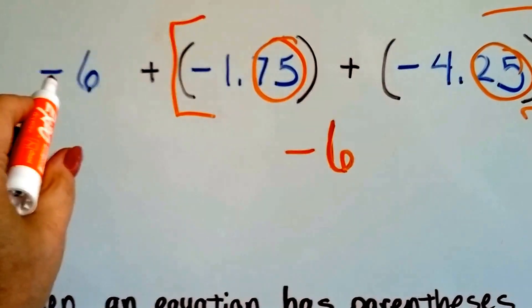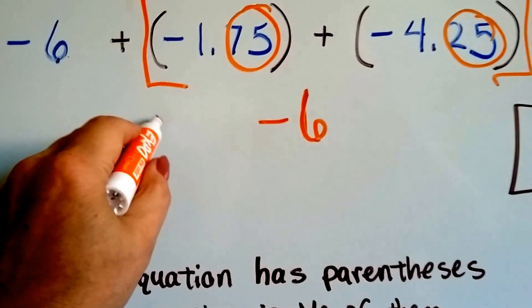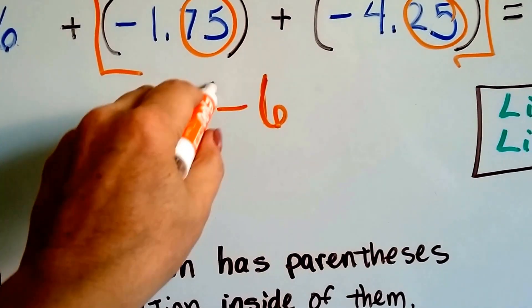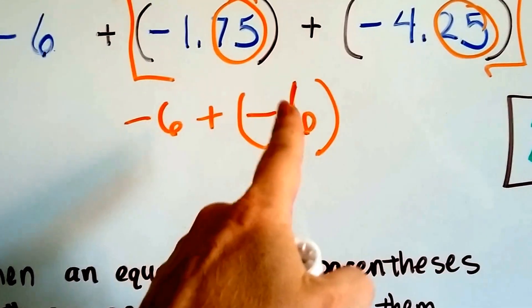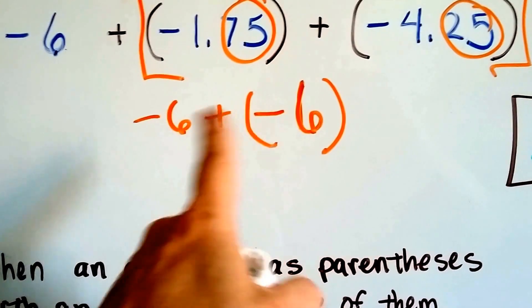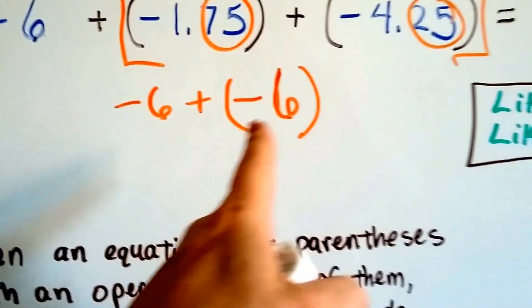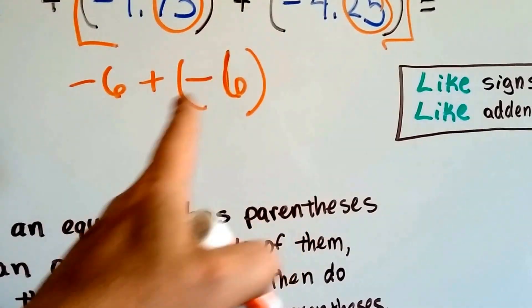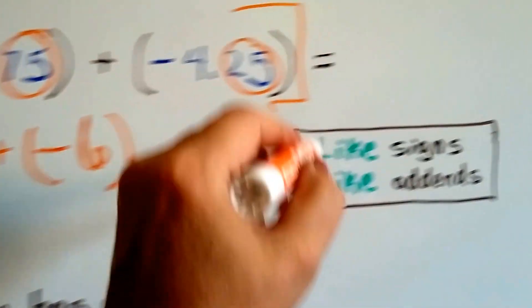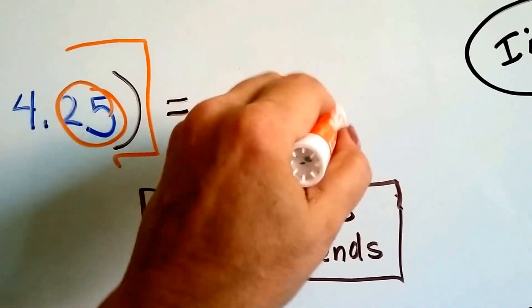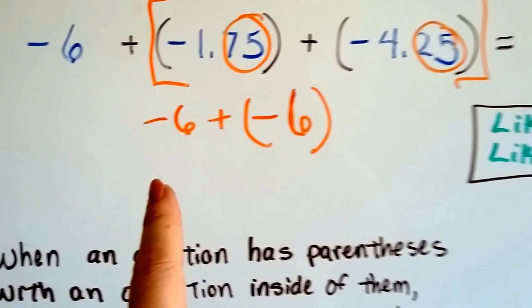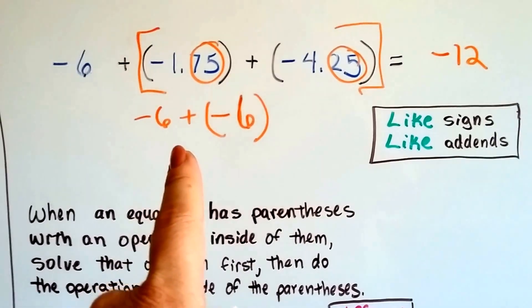So now we're going to add a negative 6 plus a negative 6. They both have the same sign, so we add them together. 6 plus 6 is 12. We take the sign of the addends, because they're alike, and we have a negative 12. Right? So don't be confused and go too quickly and think that it's a zero pair. Okay?